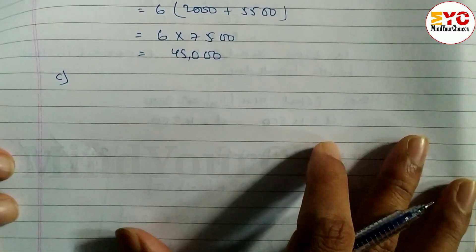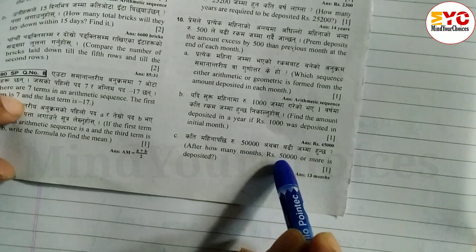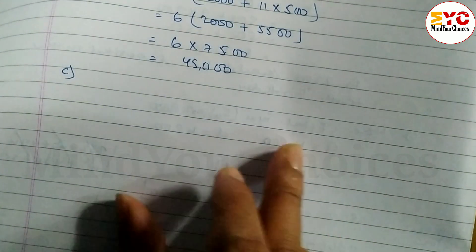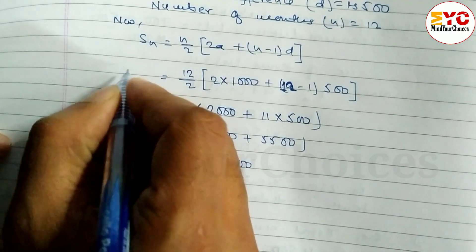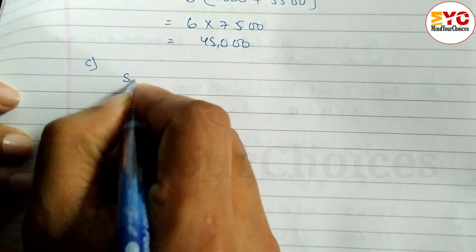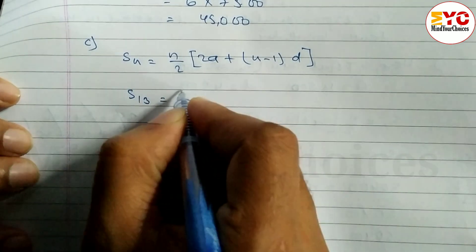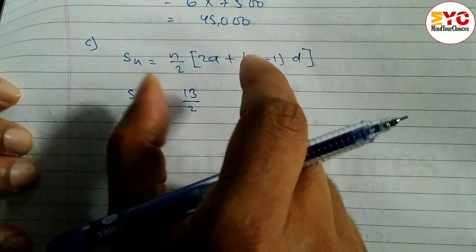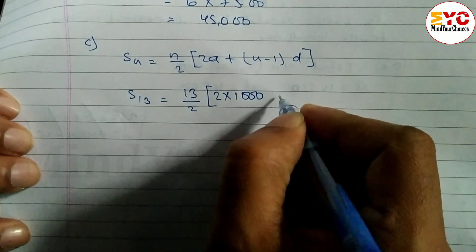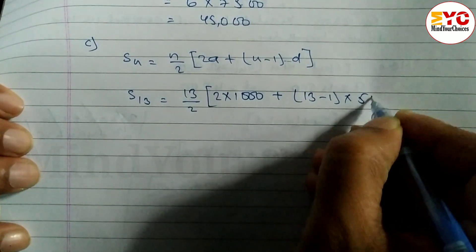The question asks: after how many months is rupees 50,000 or more deposited? Using the Sn formula: Sn = n/2 × (2a + (n−1)d), let's try n = 13. With a = 1000 and d = 500: S13 = 13/2 × (2×1000 + (13−1)×500).